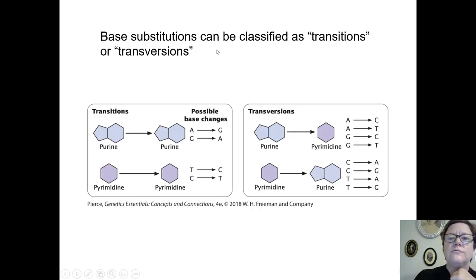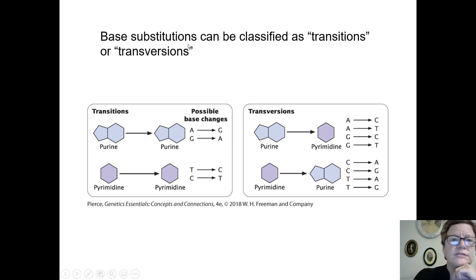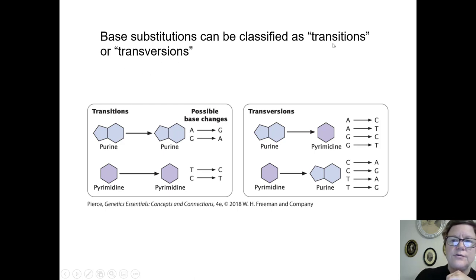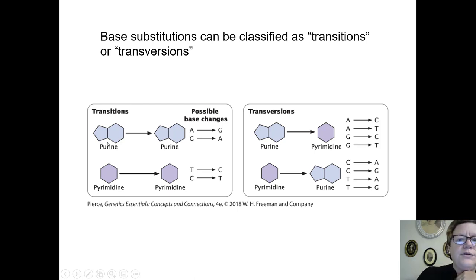We also have terminology referring to how the change in the DNA occurs at the DNA level itself. A base substitution can be classified not only as missense, nonsense, or silent, but also as transitions or transversions. If a purine base gets changed to a different purine, that's a transition. If a pyrimidine base gets changed to a pyrimidine, that's also a transition.